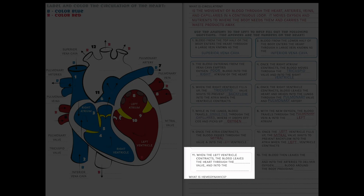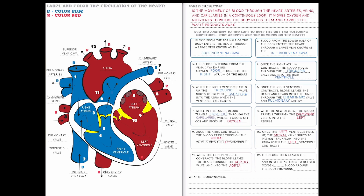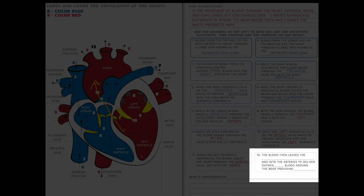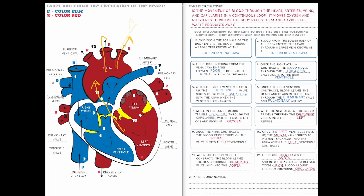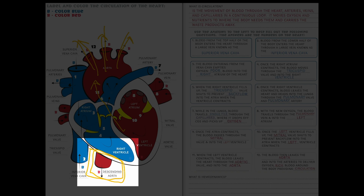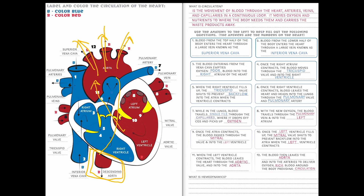Number eleven: when the left ventricle contracts, blood leaves the heart through the aortic valve and into the aorta. This yellow section here is our aortic valve, and blood gets ejected into the aorta. Number twelve: blood leaves the aorta into the arteries to deliver oxygen-rich blood around the body, providing circulation. These are the three main aortic branches, and we also have the descending aorta coming behind the heart and down to feed the rest of the body.